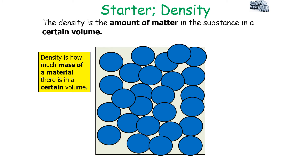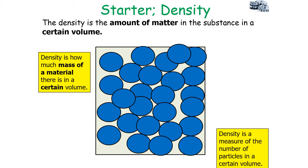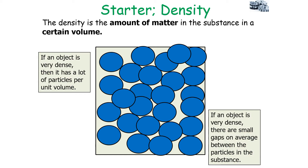Density is the amount of matter in a substance in a certain volume. We can say density is how much mass of a material there is in a certain volume. Density can be thought of as a measure of the number of particles in a certain volume, or a measure of the space between the particles — how spread out the particles are in a unit volume.